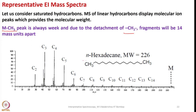One such example is N-hexadecane, molecular weight 226. The parent ion peak is present, and then you can see the fragments continuing. Loss of two CH2 units and it continues up to C2. Saturated linear hydrocarbons are quite simple to analyze and understand, and the parent peak can be readily identified.